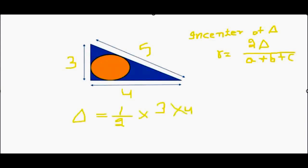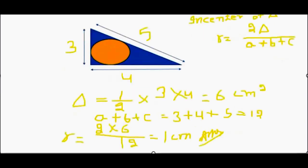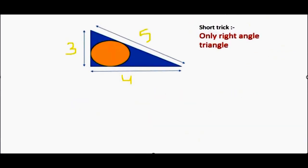And A plus B plus C is given by 3 plus 4 plus 5, that is equal to 12. Hence the radius of in-center is 2 into 6 over 12, that is equal to 1 cm.